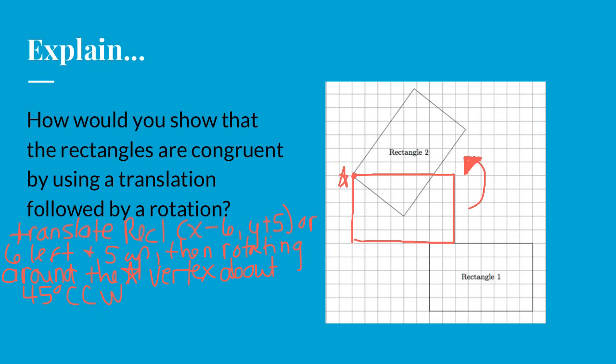So here's what I came up with. I thought I could translate rectangle one, X minus six, Y plus five, or six to the left and five up. And so I drew my new rectangle. Notice that I have a shared vertice that I put a star by. Then I want to rotate around that shared star vertice. And that's not one that we know, so I'm going to estimate that that's about 45 degrees counterclockwise. Now I'd love to hear if you came up with something different.